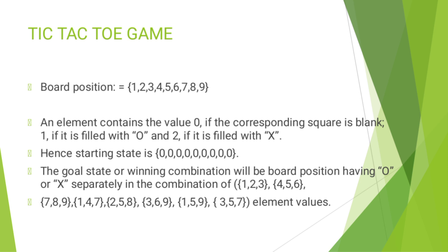First, we explain the Tic-Tac-Toe problem. In the Tic-Tac-Toe problem, we use a 3×3 matrix. The board positions are numbered 1 through 9. There are two players: X and O. An element contains the value 0 if the corresponding square is blank, 1 if it is filled with O, and 2 if it is filled with X.